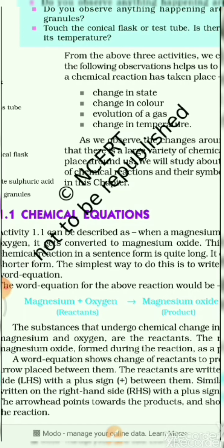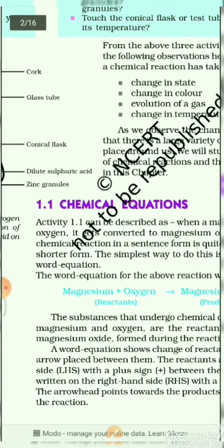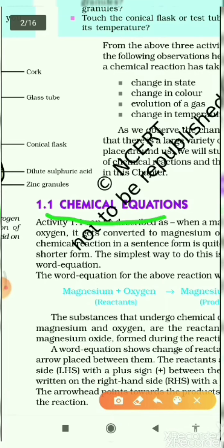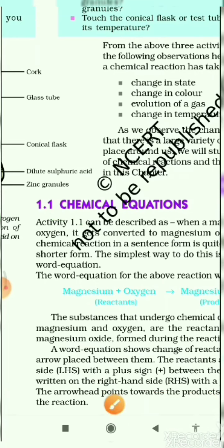This is the chemical equation. The definition of the chemical equation is: the method of representing a chemical reaction with the help of symbols and formulas of the substances involved in it. That is called the chemical equation.